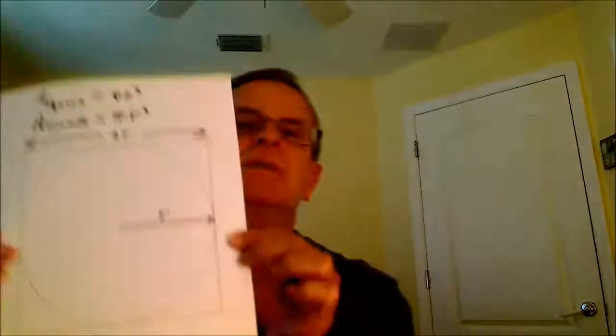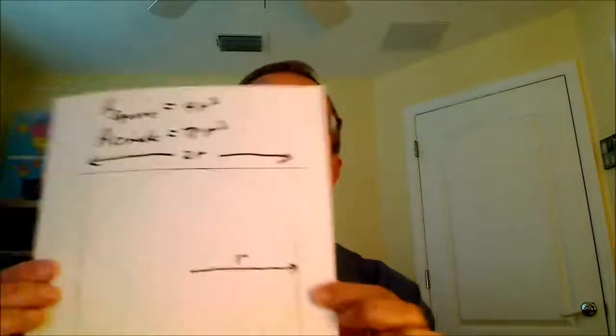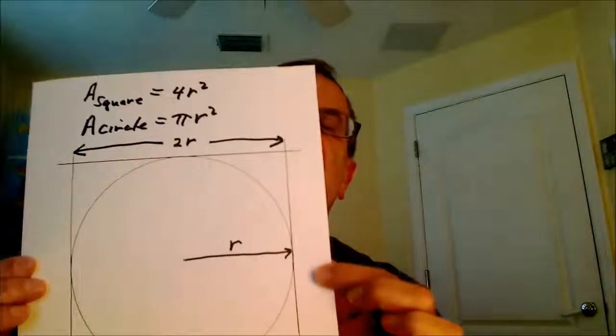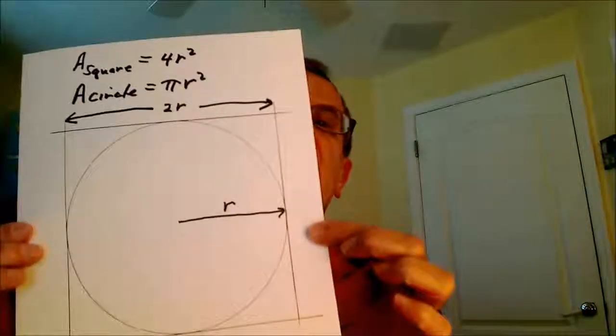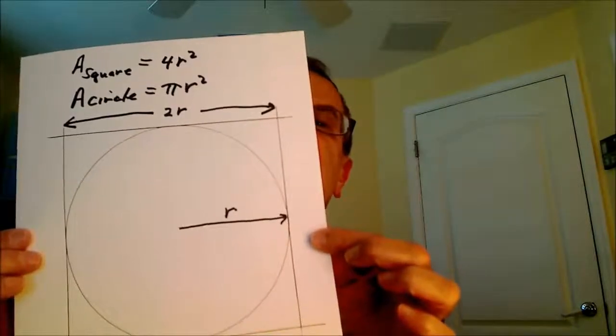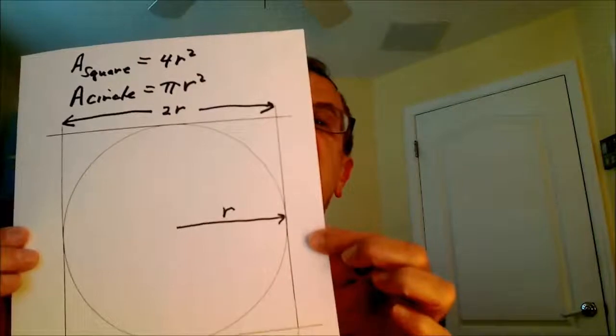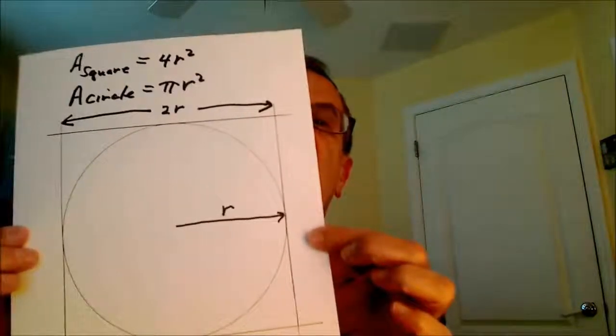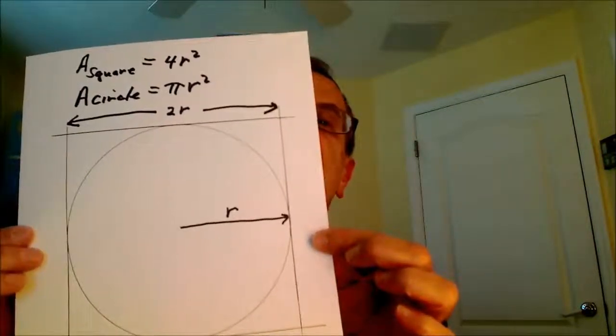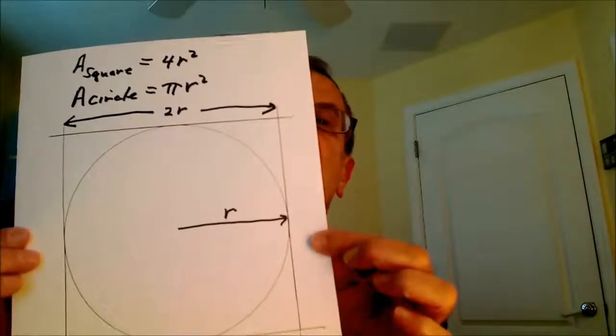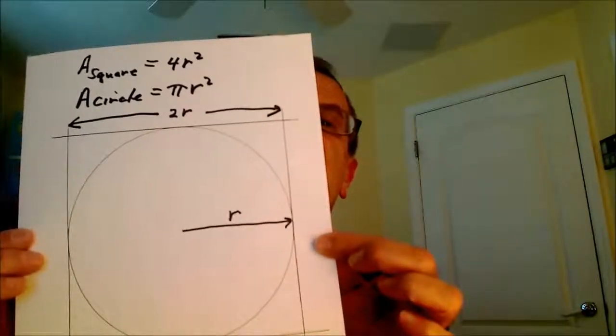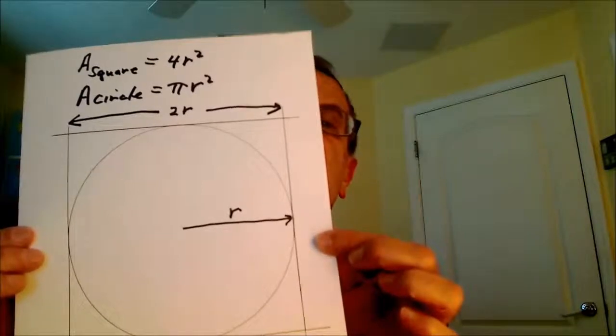It involves a circle inside a square. You can see on this piece of paper we have a circle with radius r, and the length of the side of the square is 2r. So the area of the square would be 2r squared, or 4r squared, and the area of the circle would be πr squared.